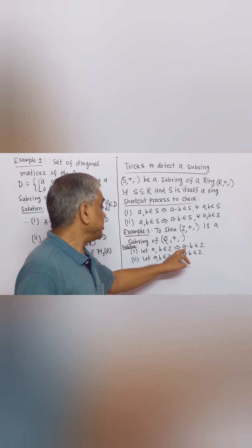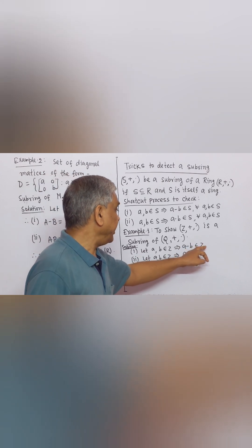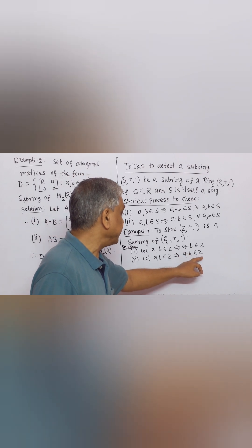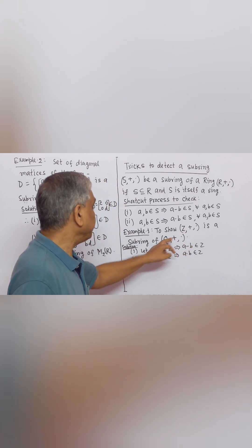Number 1. Difference of two integers is an integer and multiplication of two integers is an integer. Therefore Z is a subring of Q.